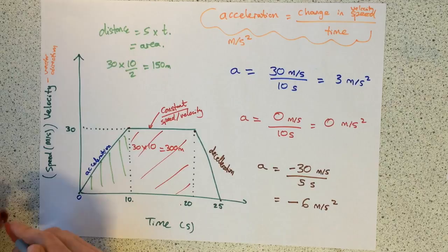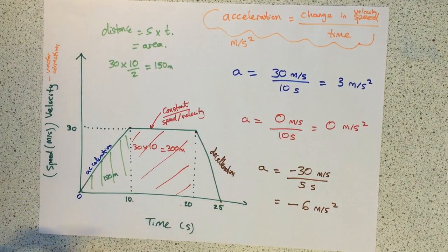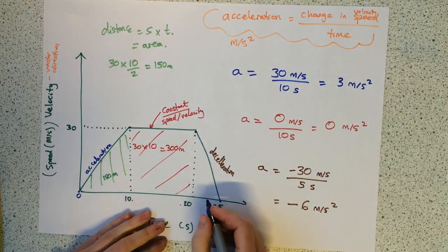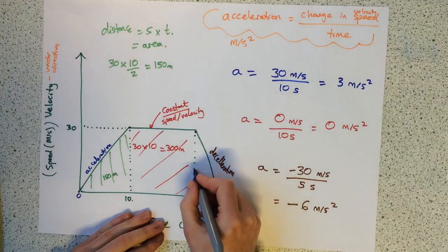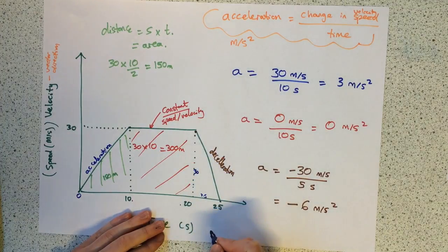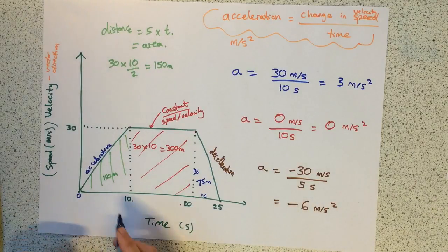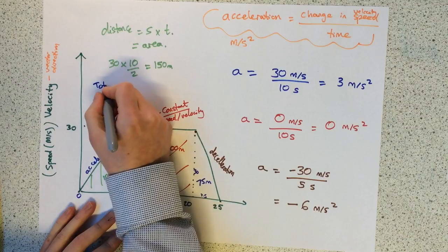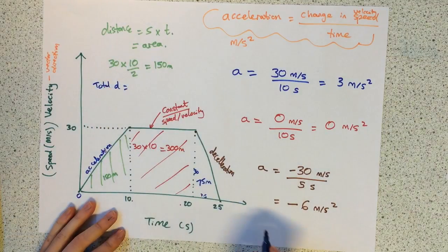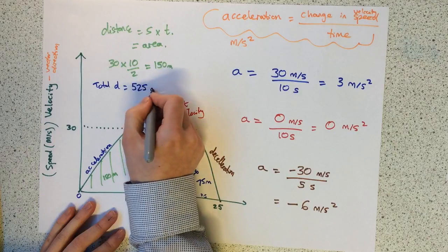The final section, again, is a half base times height. Half base is 2.5, height is 30. Times them together, you get 75 metres. So in each section, there's the distance. The total distance then, add it all together, and you get 525 metres.